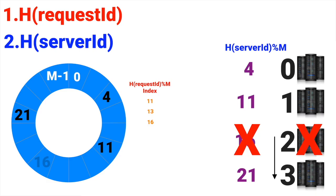However, now we have another problem: the distribution is no longer even. If you look closely, most requests are getting handled by a single server, which is also absorbing the load that was previously handled by server 2. To make the system uniformly distributed, we need to introduce the idea of virtual nodes.